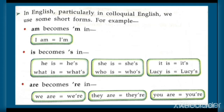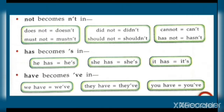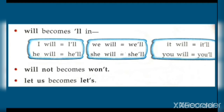For example, 'I am' becomes 'I'm', 'is' becomes apostrophe 's', 'are' becomes apostrophe 're', 'not' becomes 'n't'. Other short forms include: 'have' becomes 've', 'will' becomes 'll', 'will not' becomes 'won't', and 'let us' becomes 'let's'.